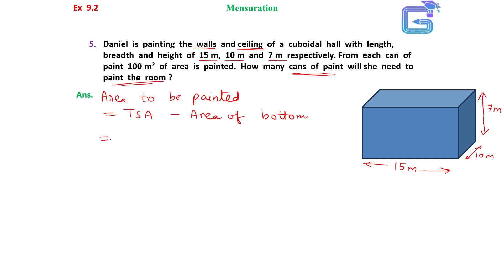So, total surface area, the formula for that is 2(LB plus BH plus HL) minus area of the base or area of the floor which is L into B. Now, we have to put in all dimensions here.